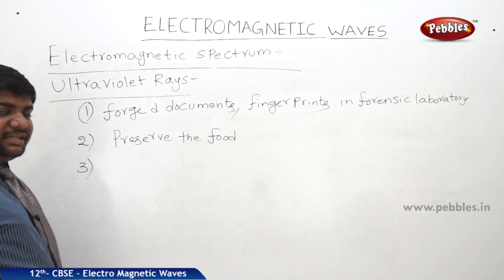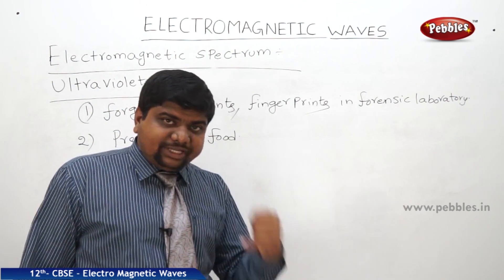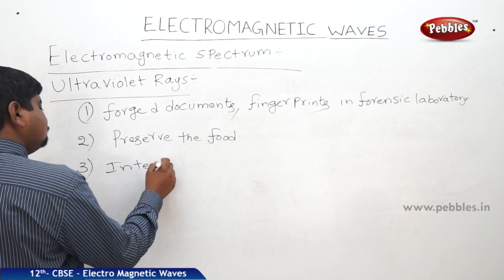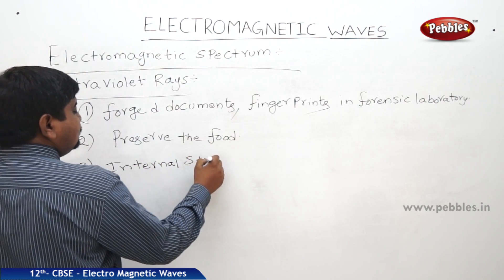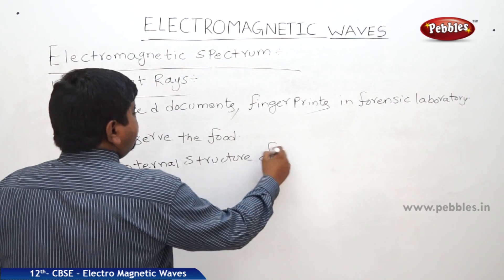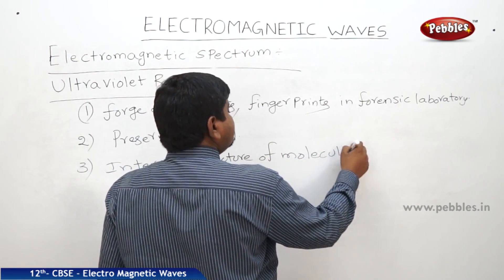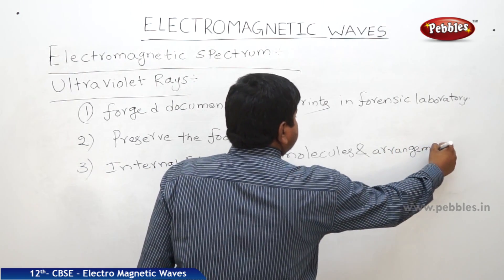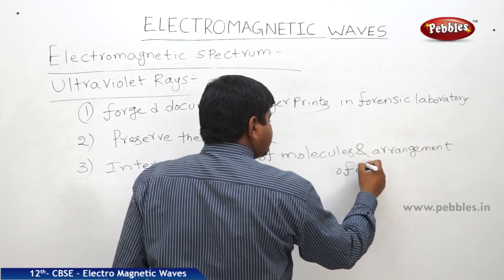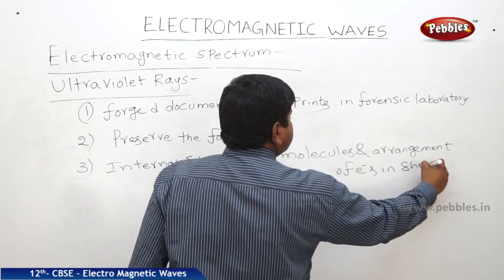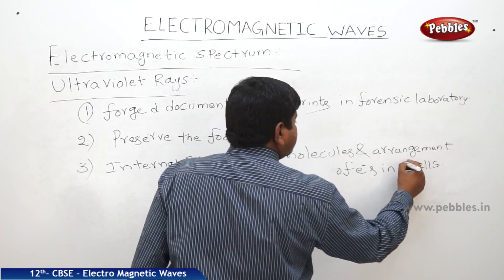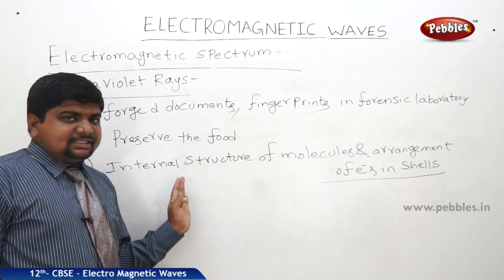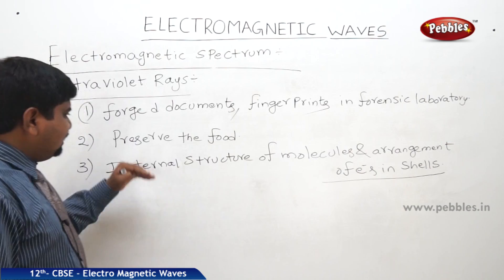These UV rays are also very much useful to find out the internal structure of molecules and the arrangement of electrons in the shells. These are important uses of ultraviolet rays.